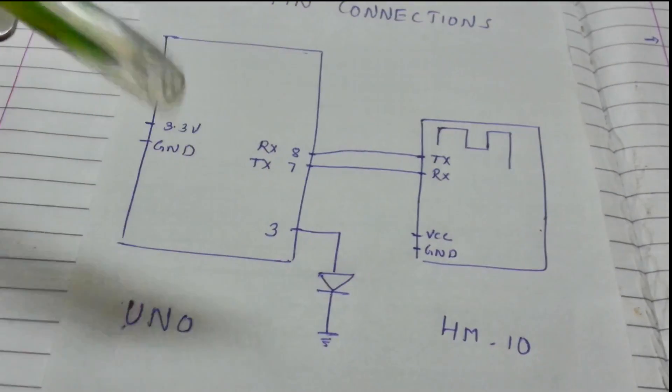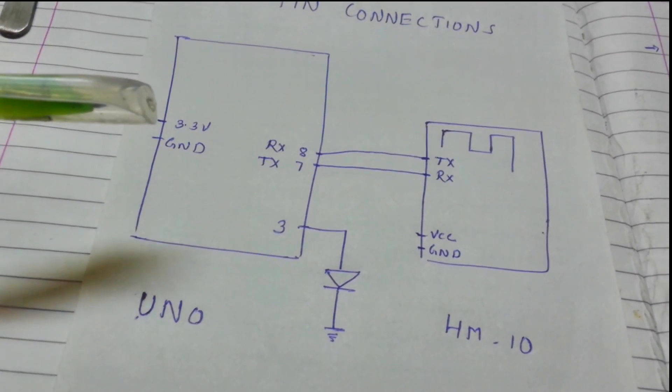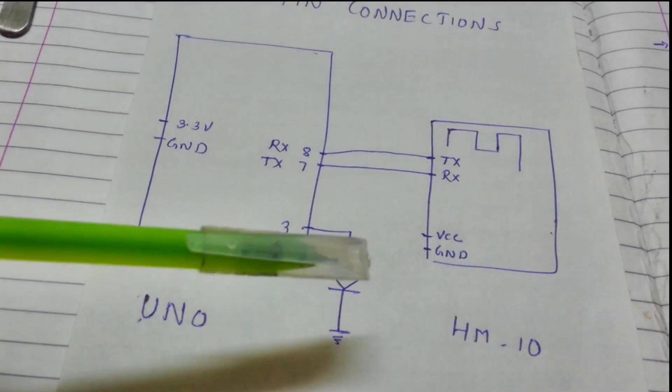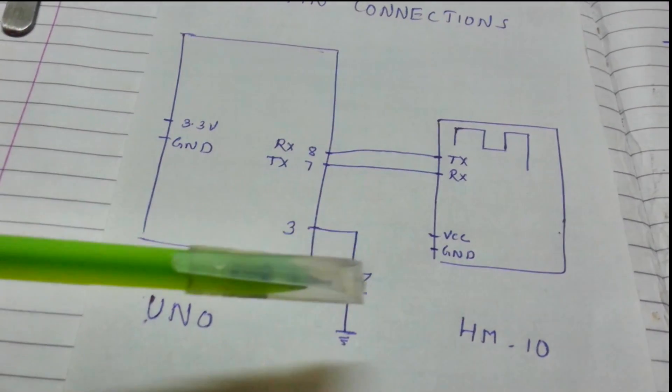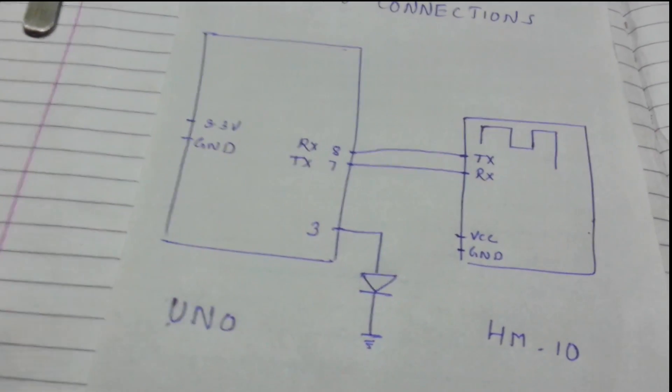The voltage directly gets connected to the 3.3 volt here, and the ground pin gets connected to the ground of the HM-10 as well as to the ground of the LED, that is an IR LED.